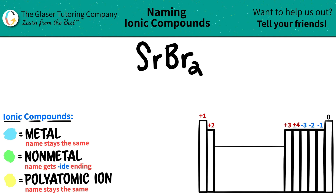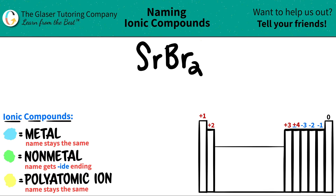Today we are going to be naming the ionic compound SrBr₂. We have two different elements here: SR, which is strontium, and Br, which is bromine. Let's map where they are on the periodic table to see why it's an ionic compound. Strontium, SR, is a metal because it's in group two on the periodic table. Anything in group two is a metal — no exceptions. They're alkaline earth metals.